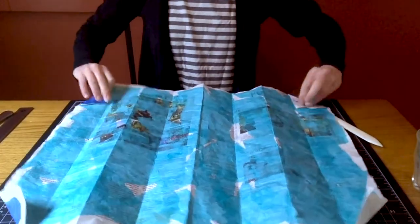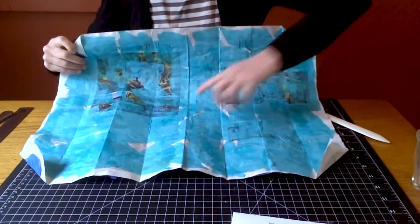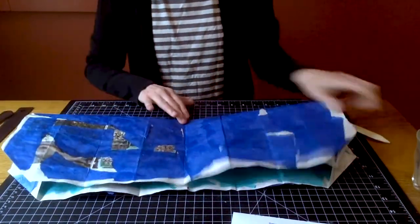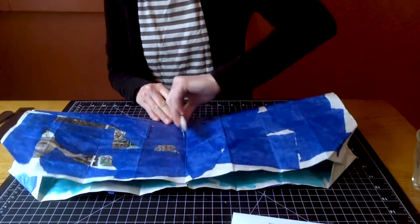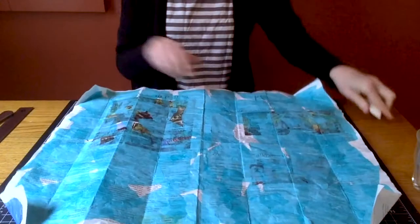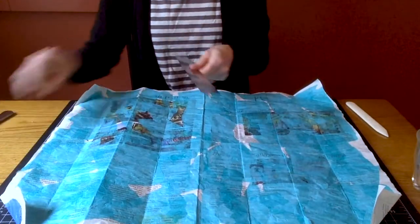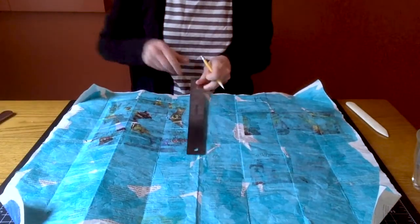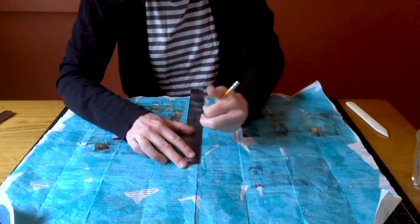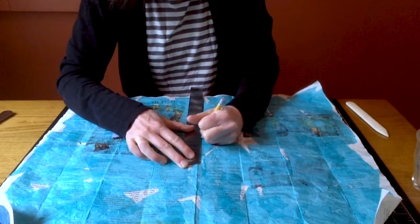And then we are going to fold our paper in half and use our bone folder to make a small crease at that center mark. And using our ruler and pencil, we'll measure about an inch up from that middle fold and make a mark.